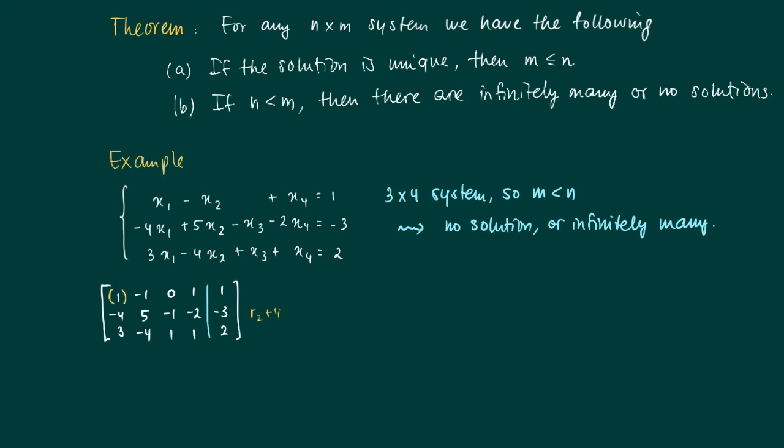As a first step, we start with the one and we're going to sweep the minus four and three in the system. We'll make them zero by adding four times row one to row two and subtracting three times row one from row three, ending up with the next augmented matrix.